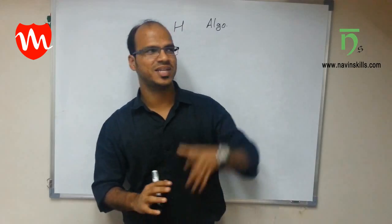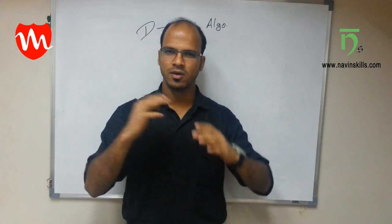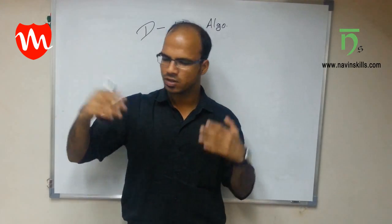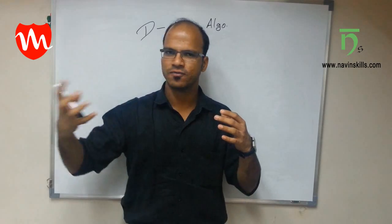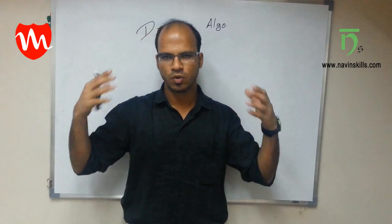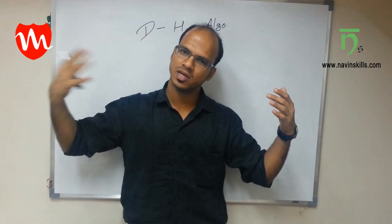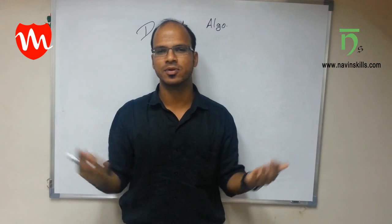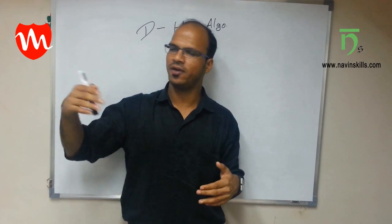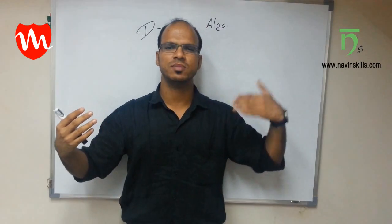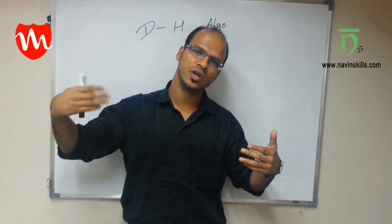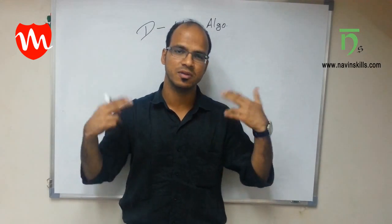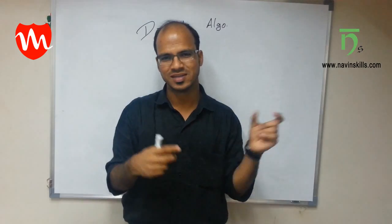Today we will talk about something called the Diffie-Hellman algorithm. In a previous video we talked about symmetric key and asymmetric key cryptography. In symmetric key cryptography, the key used for encryption and the key used for decryption are the same. In asymmetric key cryptography, you use a different key for encryption — called the public key — and a different key for decryption — called the private key.